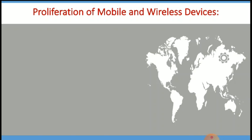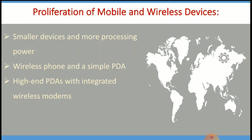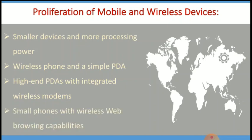Now we will see the proliferation of mobile and wireless devices, i.e., the growth of mobile and wireless devices. In today's world, more advanced features are being made for mobile devices. The trend is for smaller devices with more processing power. A few years ago, the choice was between a wireless phone and a simple handheld device. Now buyers have a choice between high-end PDAs with integrated wireless modems and small phones with wireless web browsing capabilities.